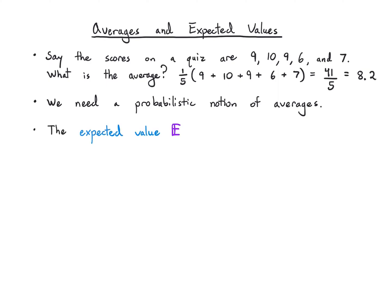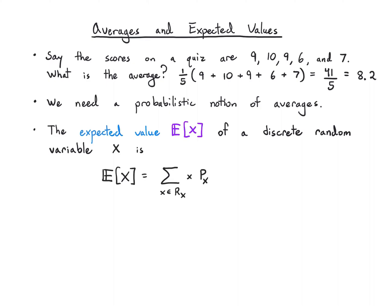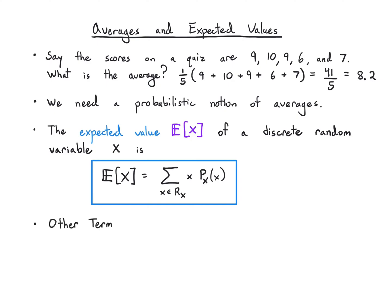The expected value E[X] — written with an E with a double line through it — is our notation for expected value, which we'll also sometimes call the expectation. The expected value of a discrete random variable X is defined to be the sum over the range of the values x weighted by the probability mass function p(x). Instead of just adding up the values and dividing by the total number, we're also weighting them by their probabilities. Different values may have different probabilities and we need to account for that. Other terminology you'll often hear is average or mean, sometimes written as μ_x.